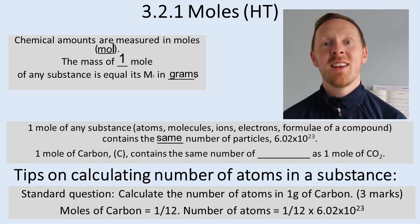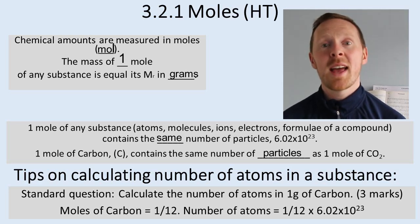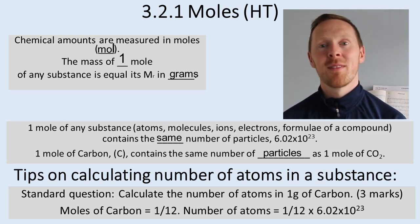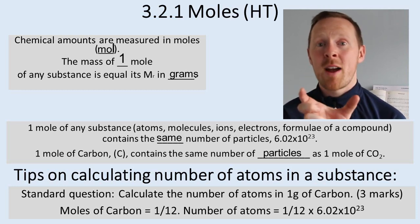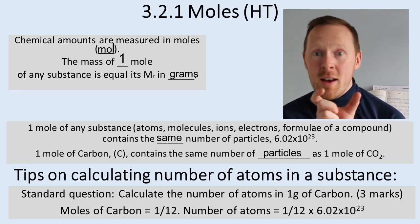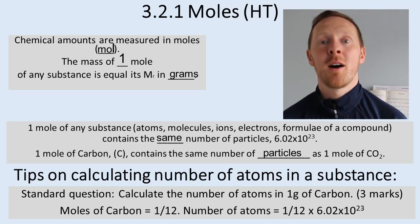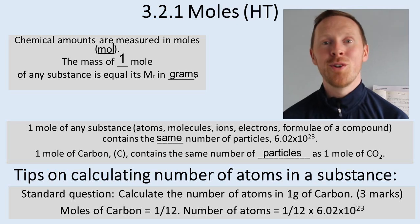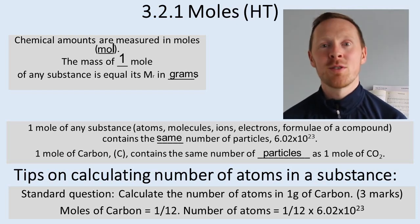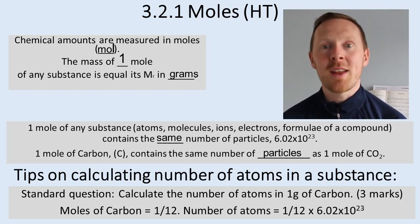Another way of thinking about this is 12 grams of carbon will have 6.02 times 10 to the 23 atoms within it. Now what's 12 grams? Well if you think about a Mars bar, a Mars bar is about 25 grams. Chop the Mars bar in half, that's just about 12 grams. Half a Mars bar, if it was made of carbon, would contain 6.02 times 10 to the 23 atoms. That's a lot of atoms in 12 grams of carbon.